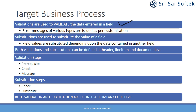Substitutions are issued to substitute the value of a field. Field values are substituted depending upon the data contained in another field. For example, you want to substitute the value of document type or document reference. You can fix it in such a way that if you use a particular document type, let us say SA, the reference document or document text should be populated with salary payment. This is the way the substitutions work.